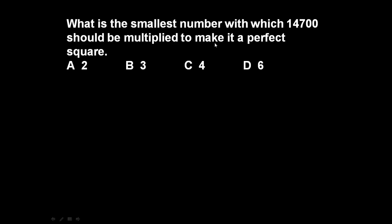So this 14700 is not a perfect square. If we multiply this number with some another number, then it may become a perfect square. So we have to determine the smallest number with which it must be multiplied so that it will become a perfect square.